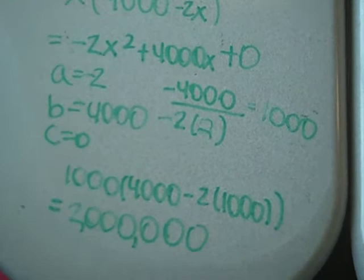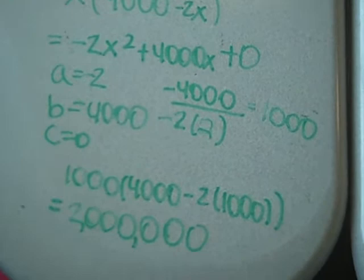And then you took the x value and plugged it back in to the original equation to get the y value, which is the vertex. So the maximum area is 2 million.